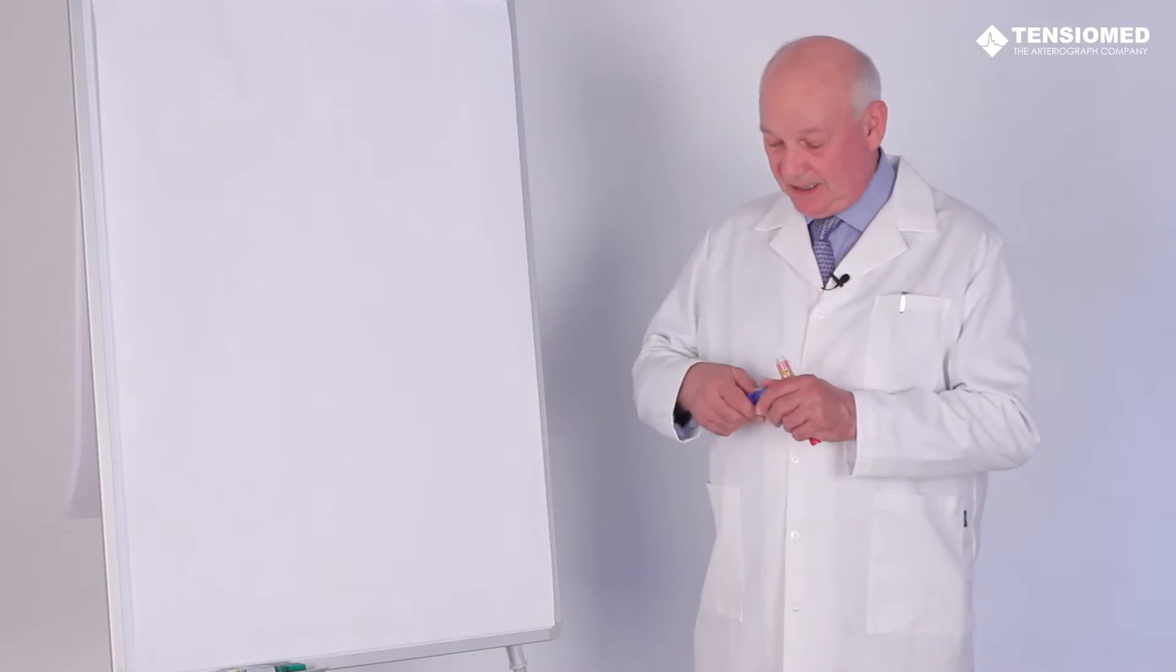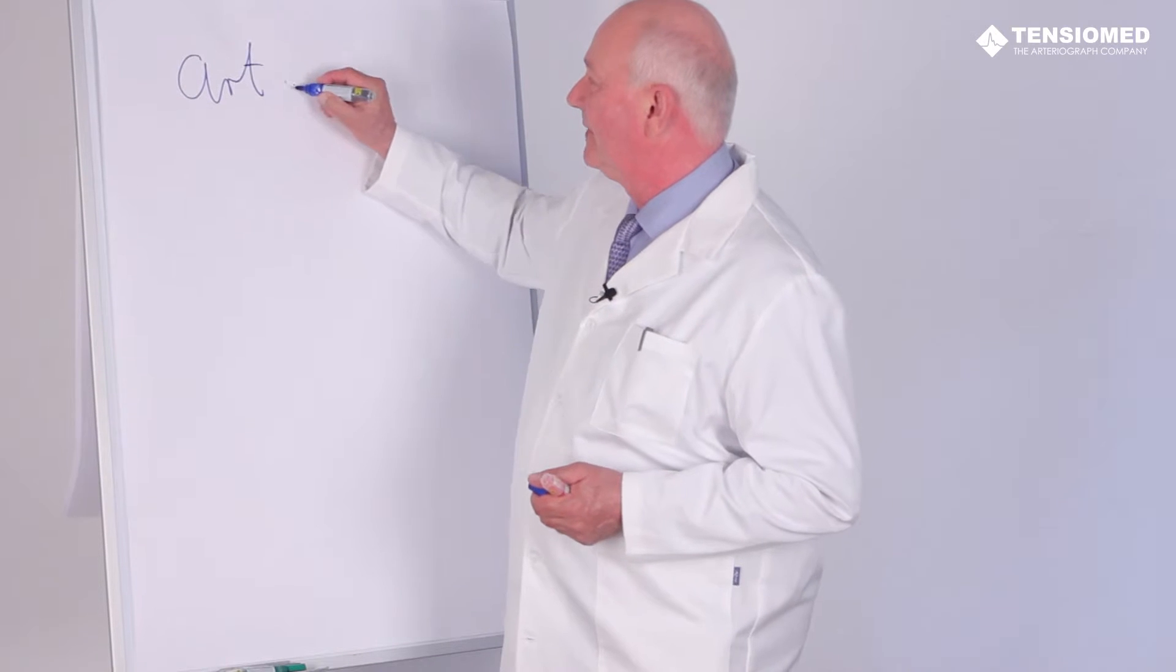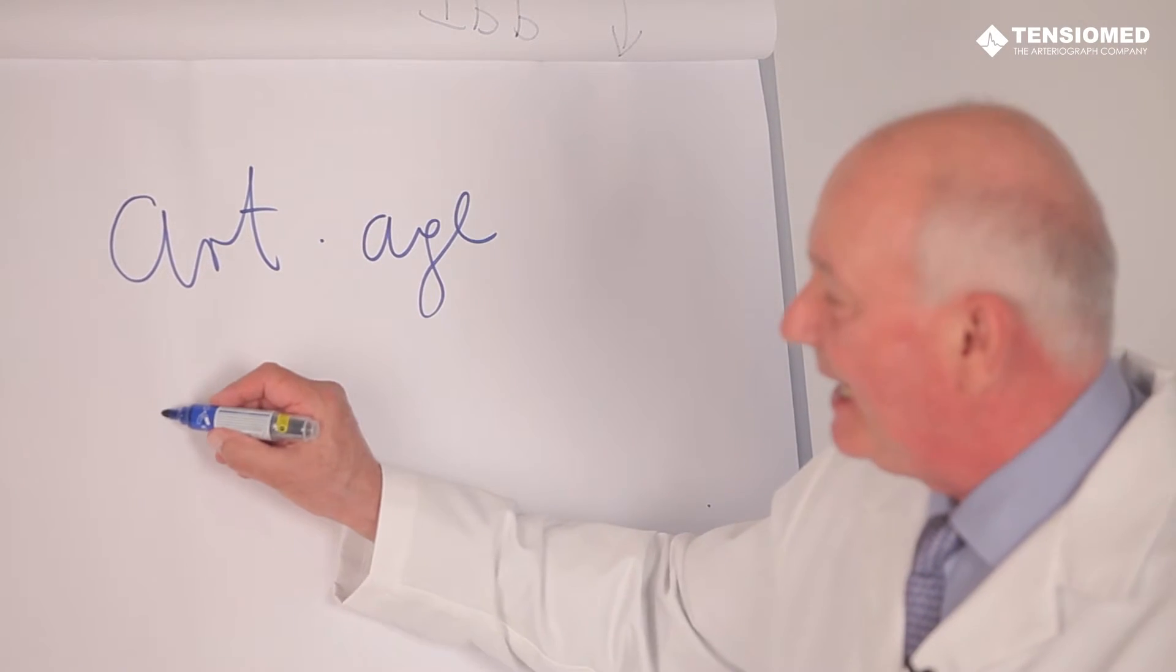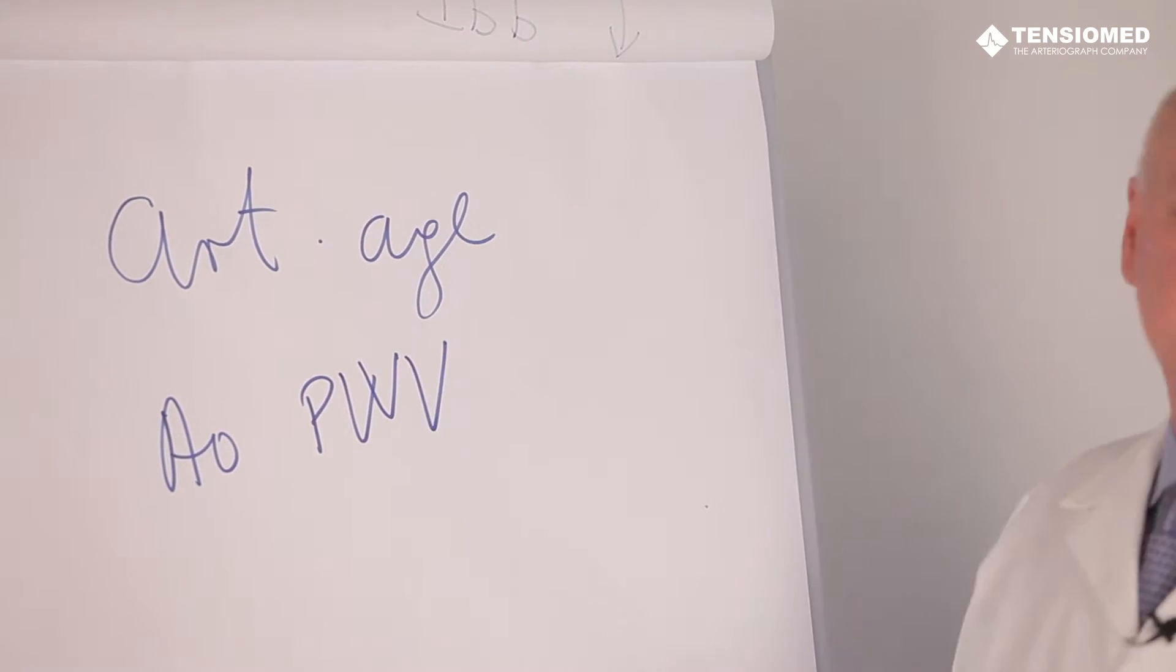Arterial aging today is mostly concerned regarding the stiffening of the arteries, especially stiffening of the aorta. So today, the arterial age is mostly expressed as aortic pulse wave velocity.